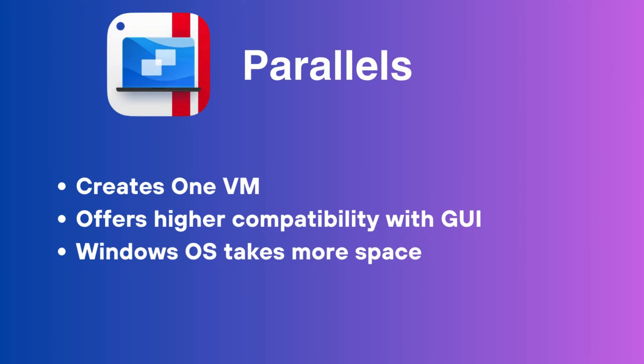The way CrossOver works is that it has to continuously create API changes — keep translating the API continuously — to make it work from a Windows language to a macOS language, and that's tiresome. Parallels, on the other hand, just creates a virtual machine on which you install Windows and run programs. The API is more compatible on Parallels than CrossOver, because Parallels creates one single platform once, and then you install Windows and everything already supports APIs on Windows — unlike CrossOver, which has to continuously keep doing it again and again for every single command your game or Windows app tries to execute.